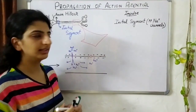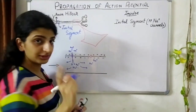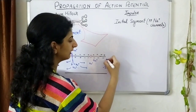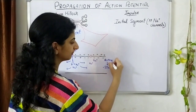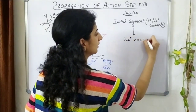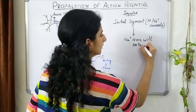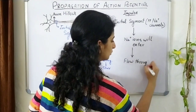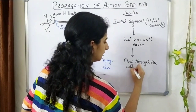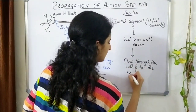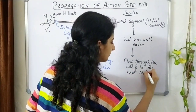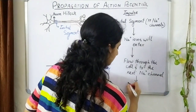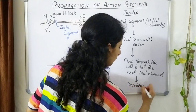When some positive ions reach the next channel, they change the polarity there as well, because positive ions arriving will alter the negative charges present. This will cause that sodium ion channel to open, because that is how the threshold value of minus 55 millivolts will be reached from the resting potential. These sodium ions will enter, flow through the cell, and reach the next sodium channel, depolarizing it.